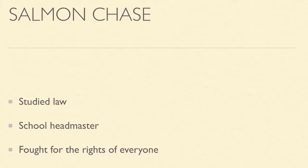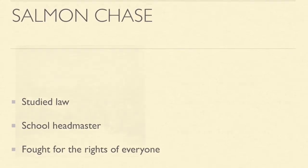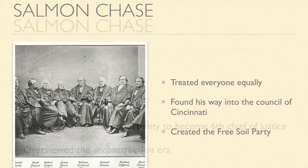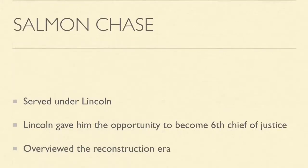In 1840, he found his way onto the City Council of Cincinnati. During his time in City Council, he helped create the Free Soil Party, which got him elected into U.S. Senate in 1849. After this time, he then served under Lincoln, gaining his trust and his desire for politics.